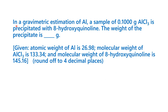Now let us see the question. In a gravimetric estimation of aluminium, a sample of 0.100 grams of AlCl₃ is precipitated with 8-hydroxyquinoline. The atomic weight of aluminium is 26.98, molecular weight of AlCl₃ is 133.34, and molecular weight of 8-hydroxyquinoline is 145.16. We are given the weight of the starting material and asked to find the weight of the precipitate. We must first understand the basic principle of gravimetric estimation, then the principle of this reaction, the significance of the reagent used, and then do the calculation.